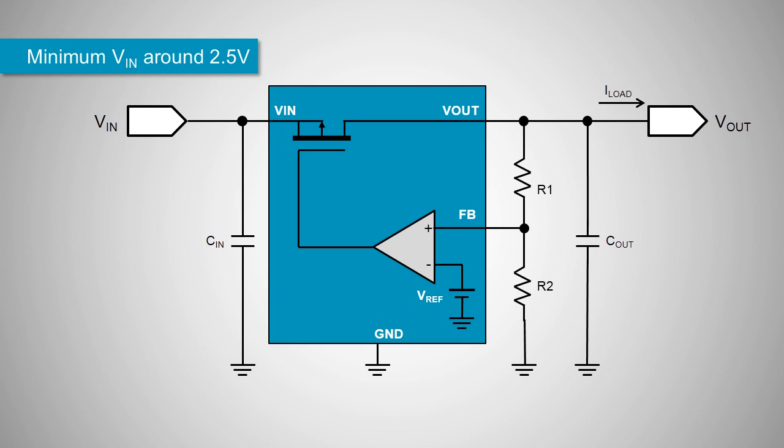In this drawing, the pass element is a p-channel MOSFET with the source connected to the input voltage. The control loop is simple. The error amplifier controls the p-MOSFET gate to keep the voltage at the feedback pin at the same level as the voltage reference.